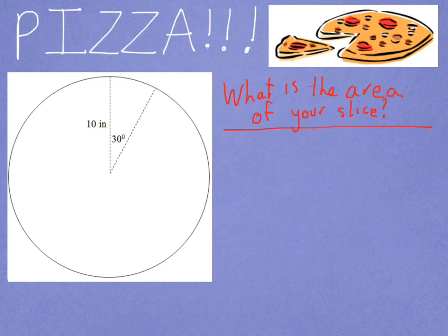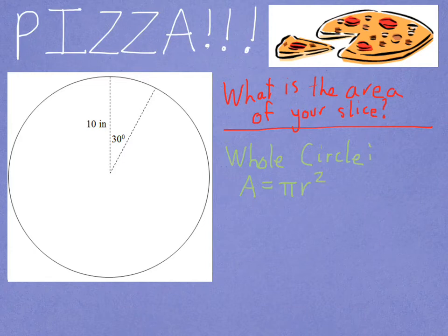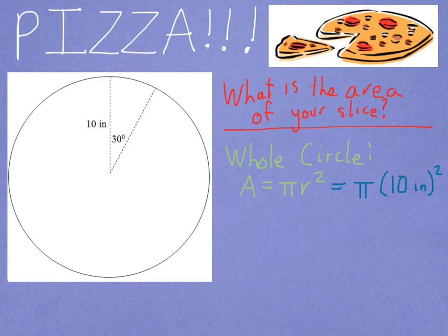It would help you to know, as you probably have learned in a previous class, that the area of the entire circle is given by the formula: area equals pi r squared, where r is the radius. So the area of the entire pizza is pi times 10 inches squared. Putting that in the calculator, that area is 314.15 inches squared — I've rounded that, of course.